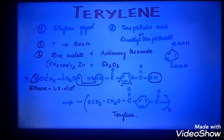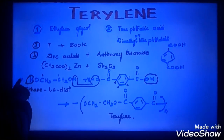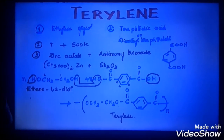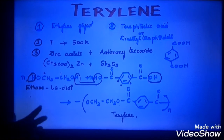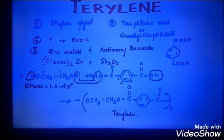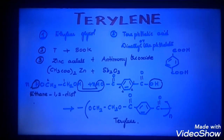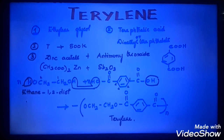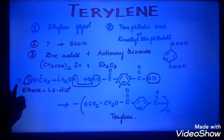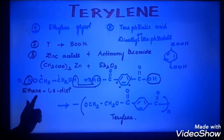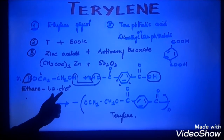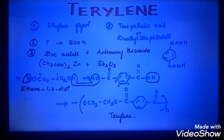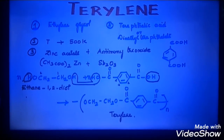So how shall we prepare Terylene? N times of reactants are used. What do you mean by N times? Polymerization requires N number of reactants, not just one or two. So N number of ethane-1,2-diol is taken and N number of terephthalic acid is taken.